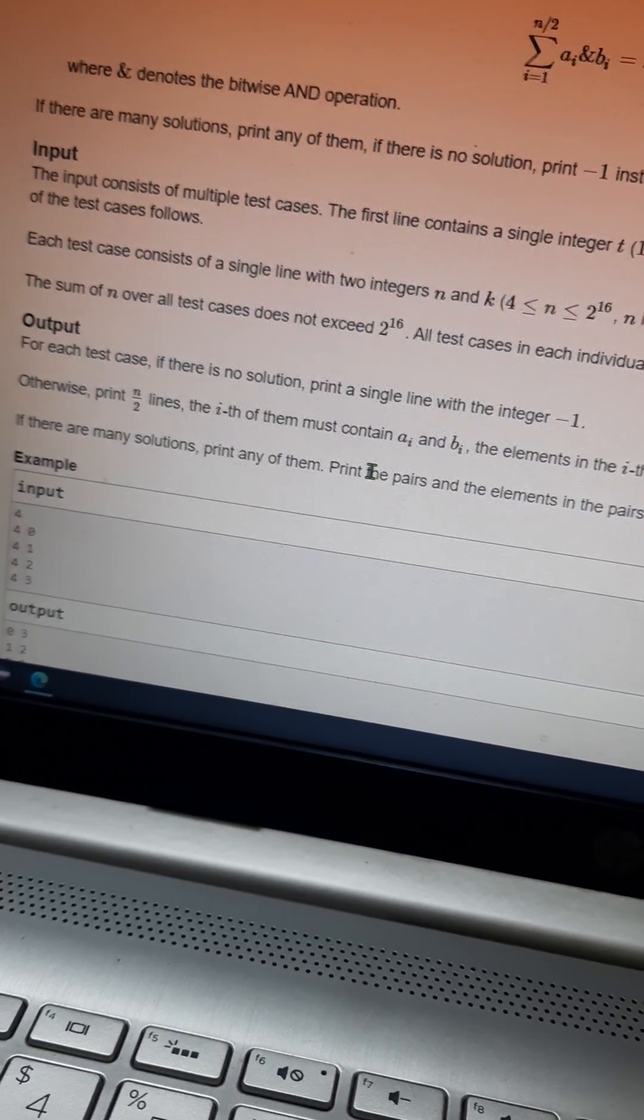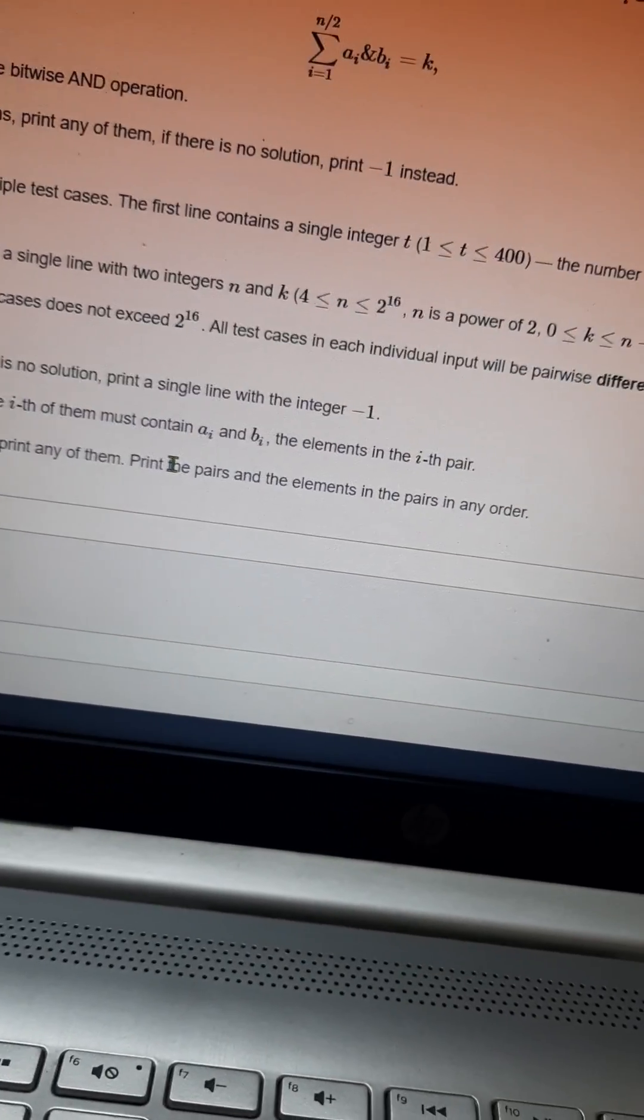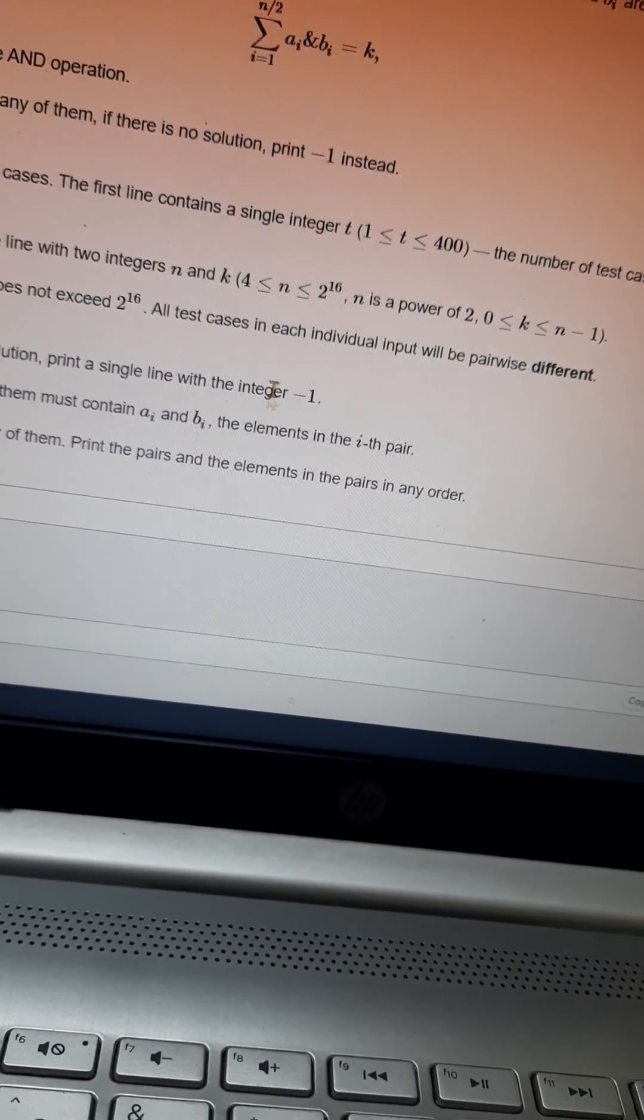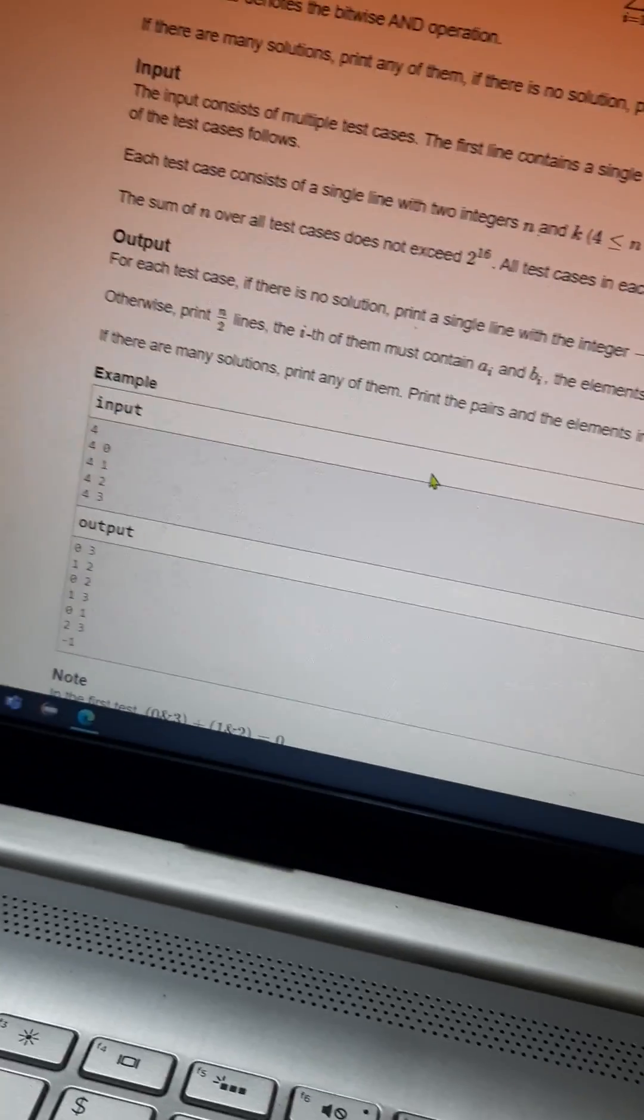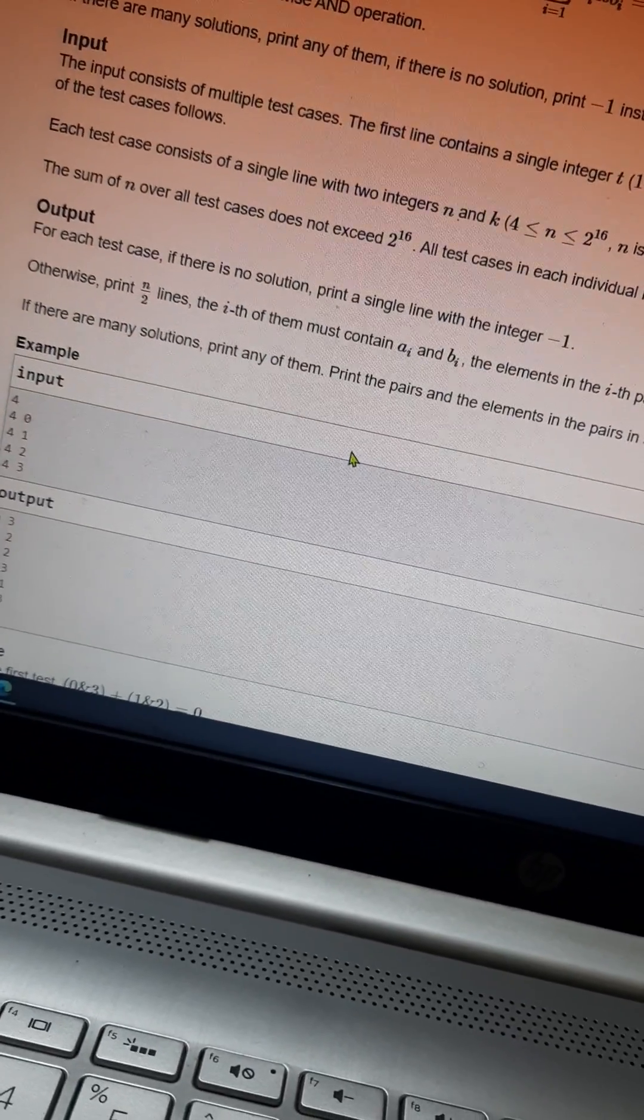The sum of n over all test cases does not exceed 2^16. All test cases in each input will be pairwise different. Output should be: for each test case, if there is no solution, print -1.